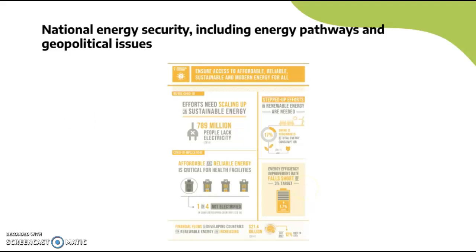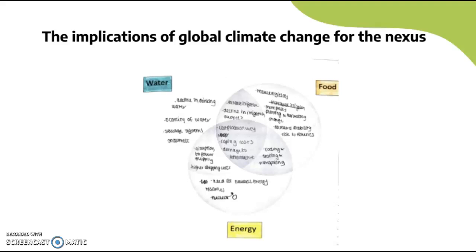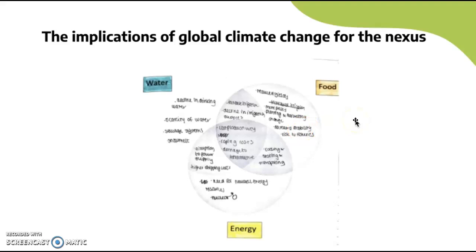Looking at the implications of global climate change for the nexus: for water, there is declining drinking water due to climate change, drought, water scarcity, damaged sewage systems, and snowmelt changes — more snowmelt now but less storage for future generations. For energy, there is a need for renewable energy resources to reduce climate change impacts, with nuclear energy being better for the environment. For food, there are reduced yields, more pests, shifting planting and harvesting seasons, decreased arability of land, and risks to fisheries.